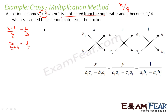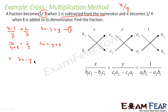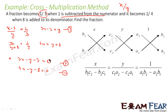Now let us simplify these equations. The first gives us 3x minus 3 equals y, and the second gives 4x equals y plus 8. After rearranging: the first equation is 3x minus y minus 3 equals 0, and the second equation is 4x minus y minus 8 equals 0.